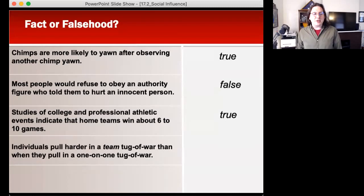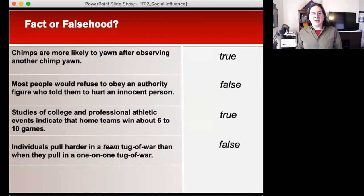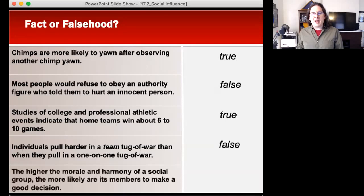Individuals pull harder in a team of tug of war than when they pull in one-on-one tug of war. What do you think? False. That's actually false. People pull less—diffusion of responsibility, bystander effect, right? If somebody has a perception that they're acting alone, they will actually pull harder.